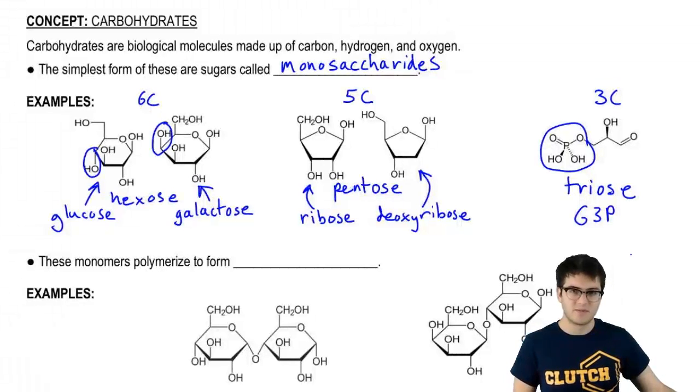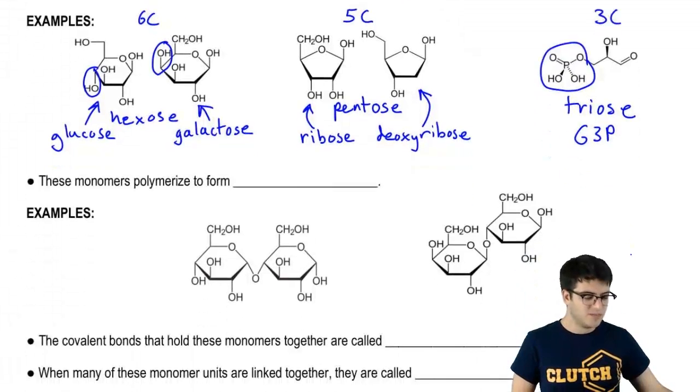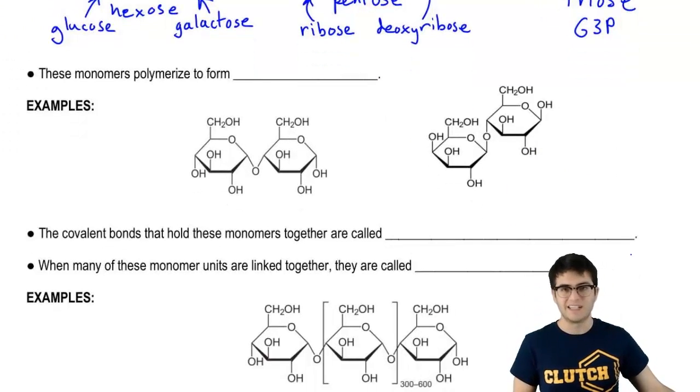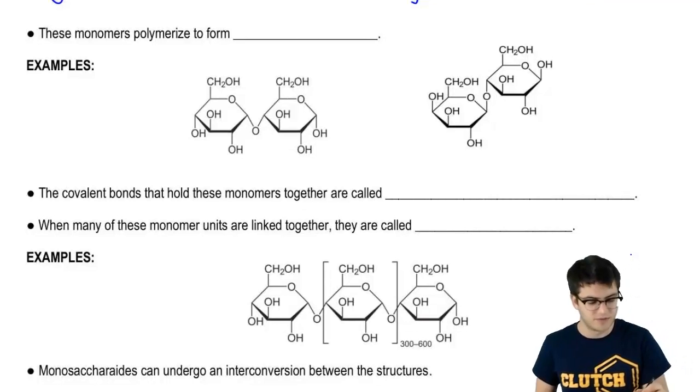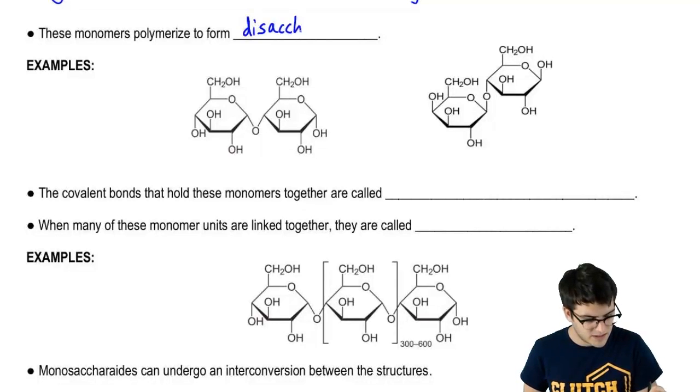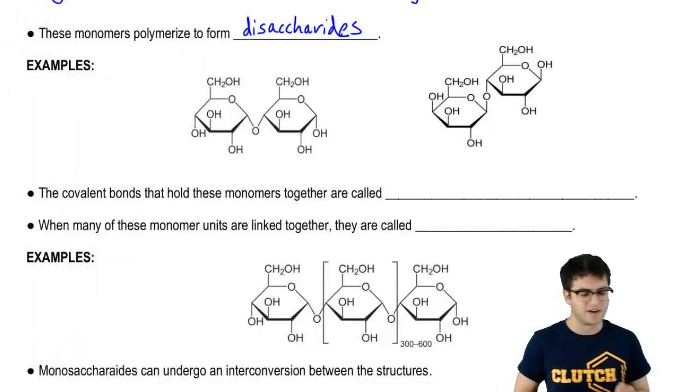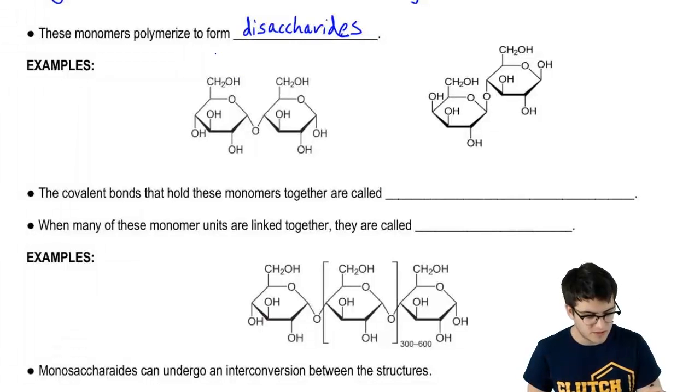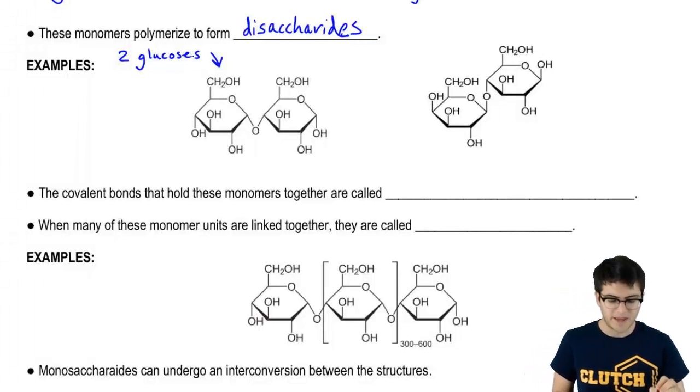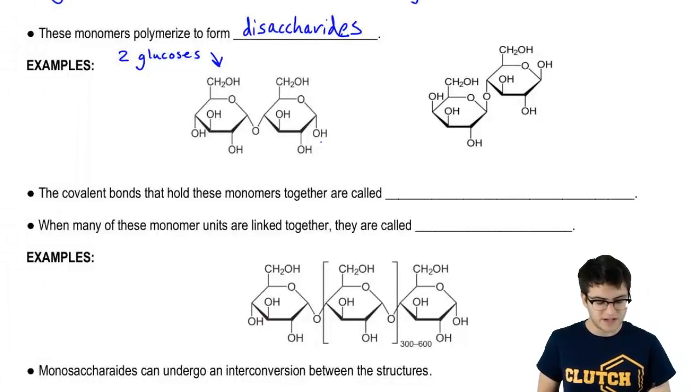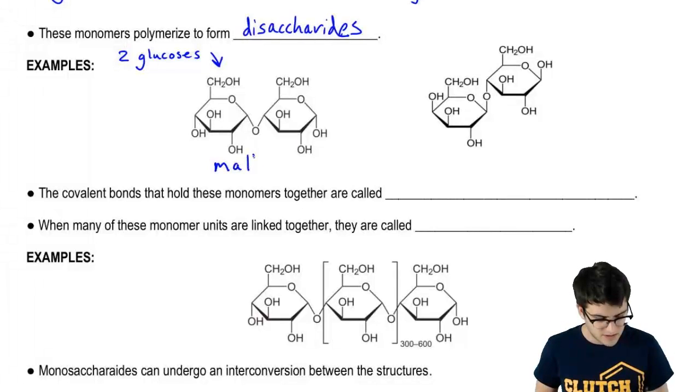These monosaccharides, which are monomers of carbohydrates, polymerize through a dehydration reaction like we saw in the previous video. They polymerize to form disaccharides, which are simply two monosaccharides linked together. Here, this molecule is made up of two glucoses, and these two glucoses get together to form a disaccharide called maltose.